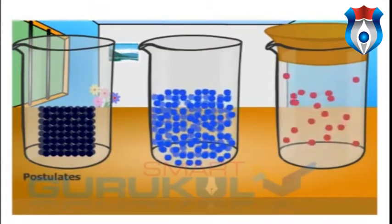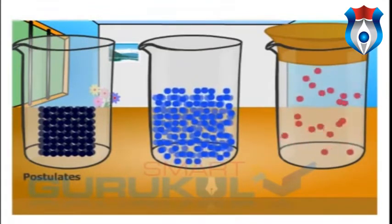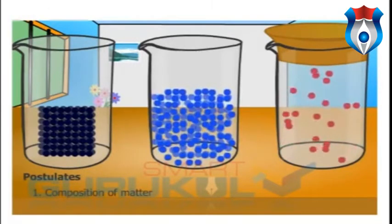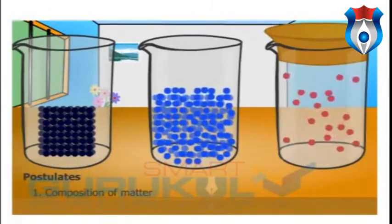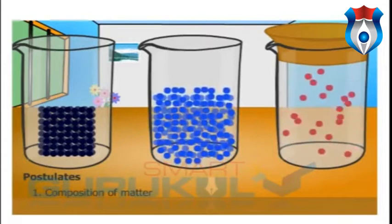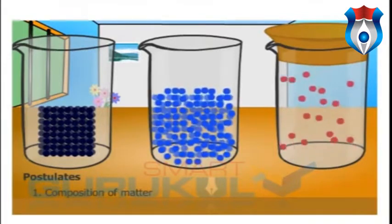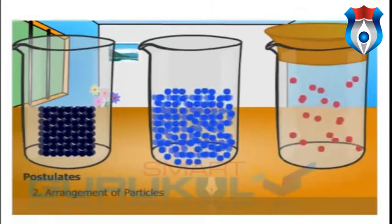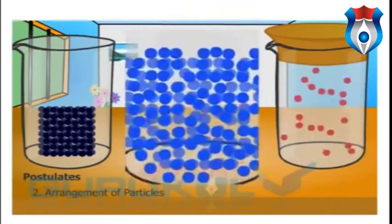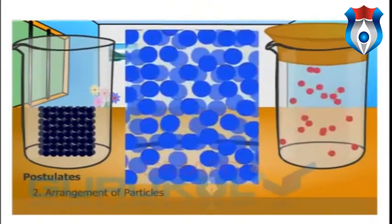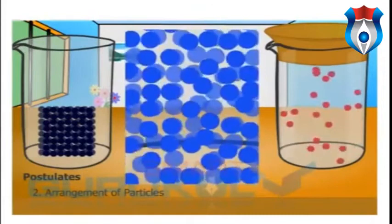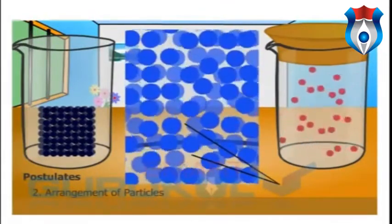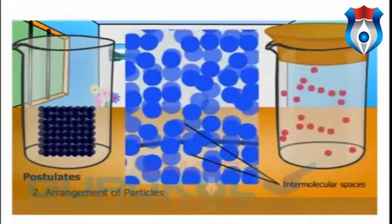Postulates of kinetic molecular theory: the first is composition of matter — this theory explains that matter consists of small particles, which may be atoms, molecules, or ions. The second is arrangement of particles — whenever the particles are arranged, they have some spaces lying in between them. These spaces are called intermolecular spaces.